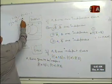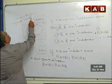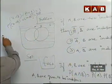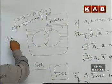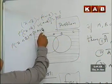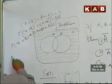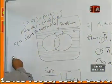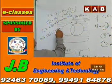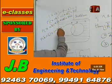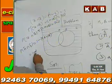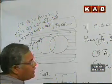Writing probability of A̅ intersection B̅ union A union B, you get probability of sample space, which is 1. Since these are disjoint events, probability of A̅ intersection B̅ plus probability of A union B equals probability of S equals 1. Therefore, probability of A̅ intersection B̅ is equal to 1 minus probability of A union B.